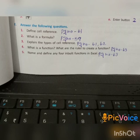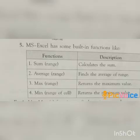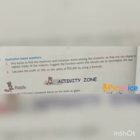Question 5: Name and define any four inbuilt functions in Excel. Answer: MS Excel has built-in functions. 1: SUM(range) — calculates the sum. 2: AVERAGE(range) — finds the average of a range. 3: MAX(range) — returns the maximum value. 4: MIN(range of cells) — returns the minimum value.